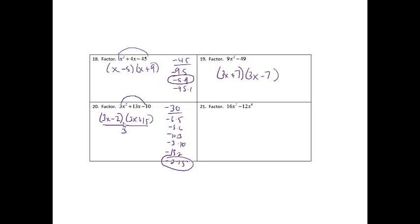And then I do need to divide the 3 out of one of the parts. And I'm going to divide it out of the second set of parentheses. So 3x minus 2 stays exactly how it is. And then if I divide the 3 out, this will be x plus 5.